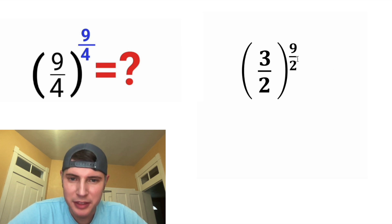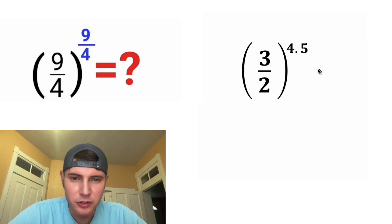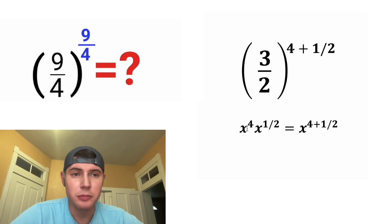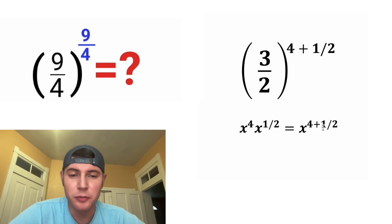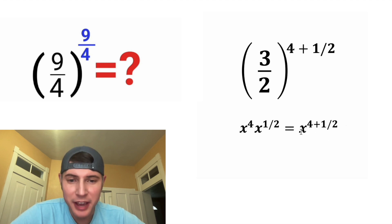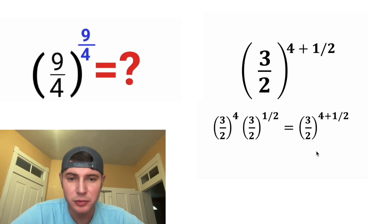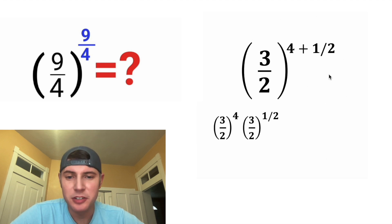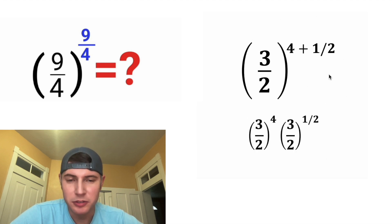So there are a lot of different ways to do this. I think what I want to do is rewrite the 9 halves as 4 plus 1 half. This would also be true: x to the 4 times x to the 1 half is equal to x to the 4 plus 1 half. And instead of x, let's make this 3 halves. This on the right-hand side is the same thing as what we had, so I'm just going to set it equal to this.